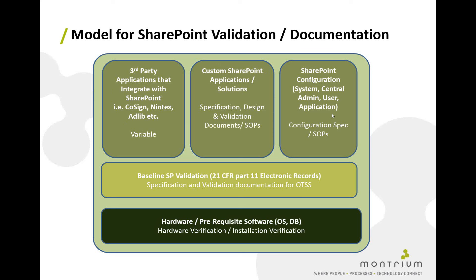The last area is standard SharePoint configuration. There are many different areas within SharePoint where we need to configure the system — at the system level, central admin level, user level, and application level. To document this properly, we'll have a configuration specification, which should be a controlled document containing all the parameters needed to properly configure the system at all levels. We'll also have an SOP or SOPs to govern that configuration process.